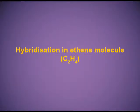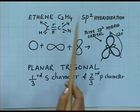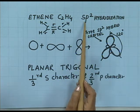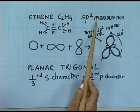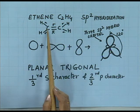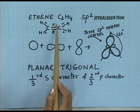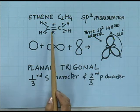We have discussed hybridization in ethane molecule; now let us discuss hybridization in ethene, C2H4. In ethene, the hybridization is SP2. In the ethene molecule, between the two carbon atoms there is one sigma bond and one pi bond. The sigma bond is formed by end-to-end overlapping, and the pi bond is formed by sideways overlapping.